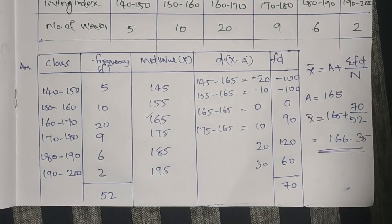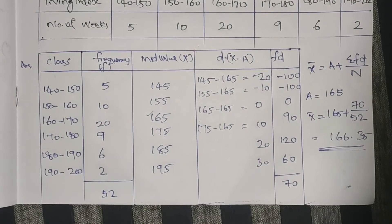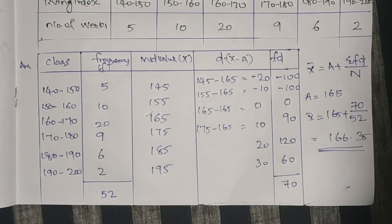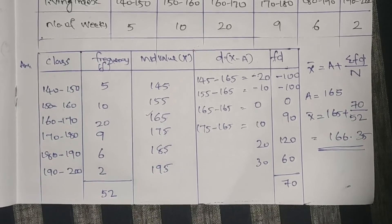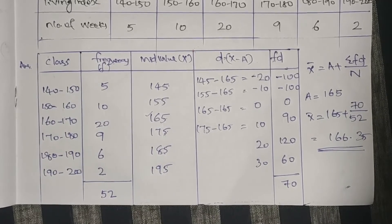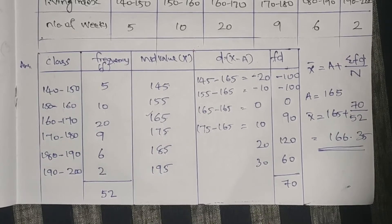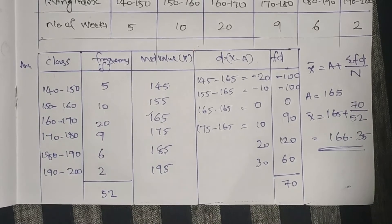The result is 166.35, which is the average weekly cost of living index. We have identified the mean for the grouped data.